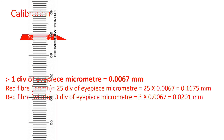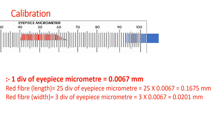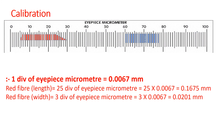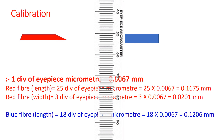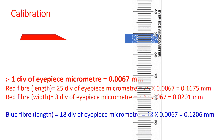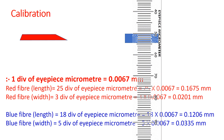Let us take another example — a blue fiber. We rotate the eyepiece micrometer and record the length: it starts at division 60 and ends at 78, giving 18 divisions. So the length of the blue fiber is 18 divisions of the eyepiece micrometer. To determine its width, we rotate the eyepiece 90 degrees; it starts at 50 and ends around 54.5 to 55 — we consider it as 5 divisions. So the width of the blue fiber is 5 divisions.